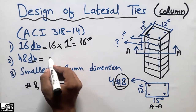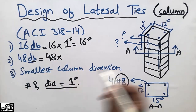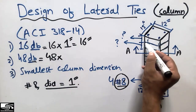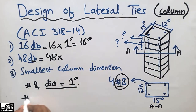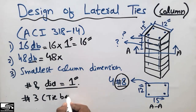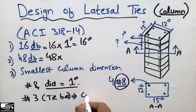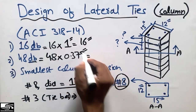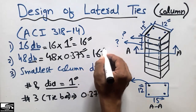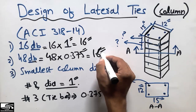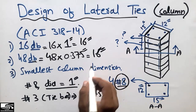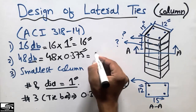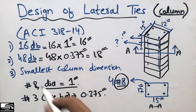For Formula 2: 48 times the diameter of the tie bar. We are assuming we will use number three bars as the tie bars. The diameter of a number three bar is 0.375 inches. So 48 × 0.375 = 18 inches.